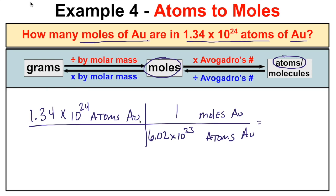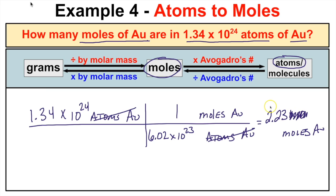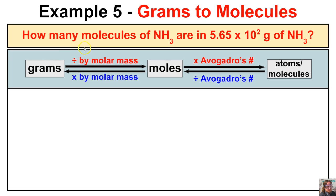We take 1.34 × 10²⁴ and divide by 6.02 × 10²³. The atoms of gold cancel, leaving us with moles of gold, and we end up with 2.23 moles. So 1.34 × 10²⁴ atoms of gold is the same as 2.23 moles of gold.